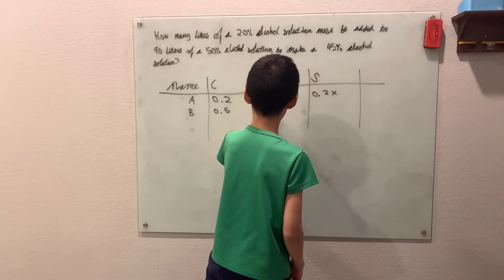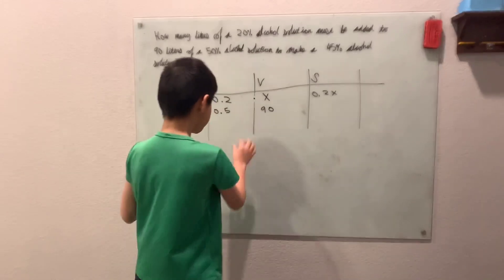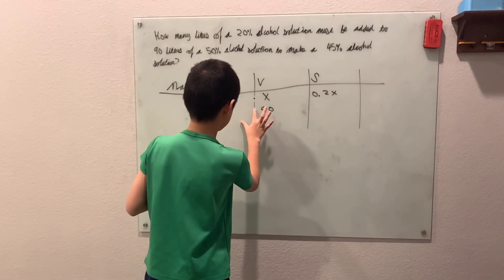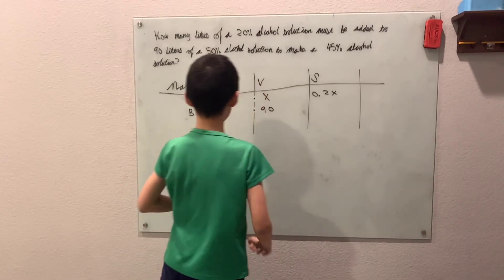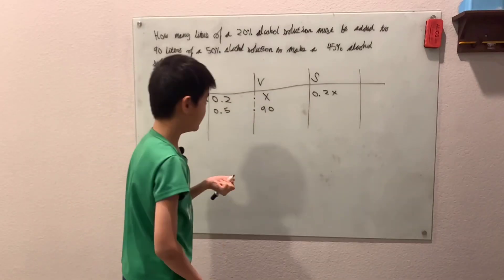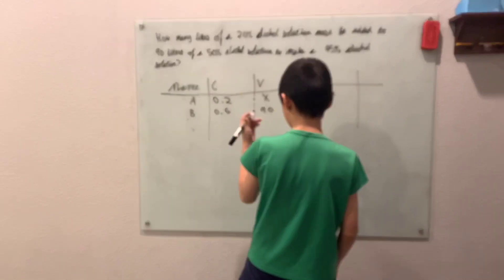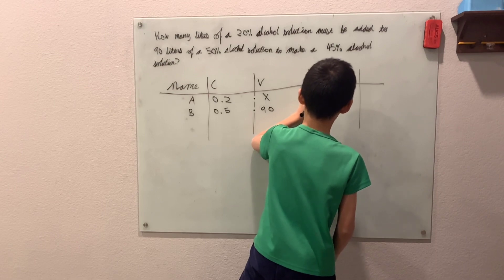And the substance, again, it's 0.5 of 90 of concentrated alcohol, and that would be 45.